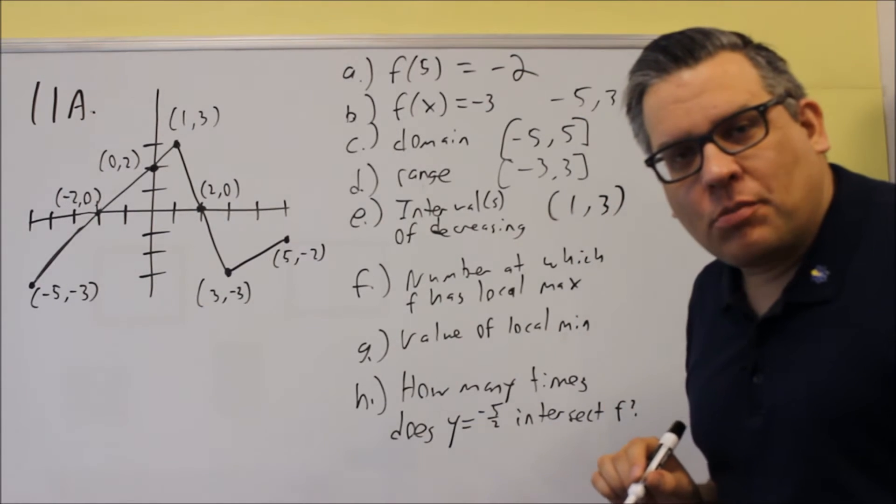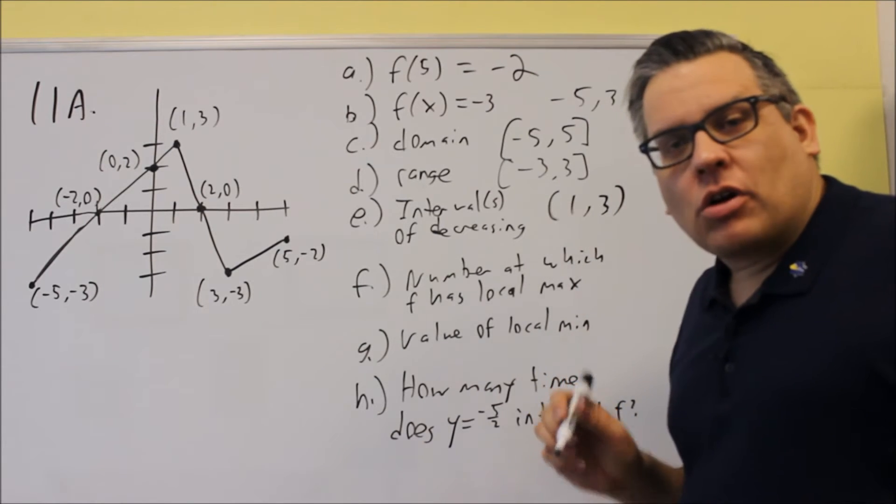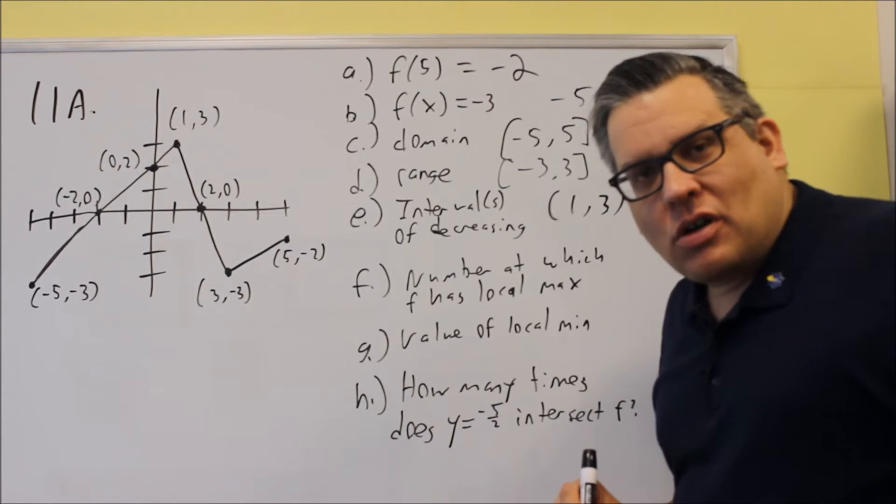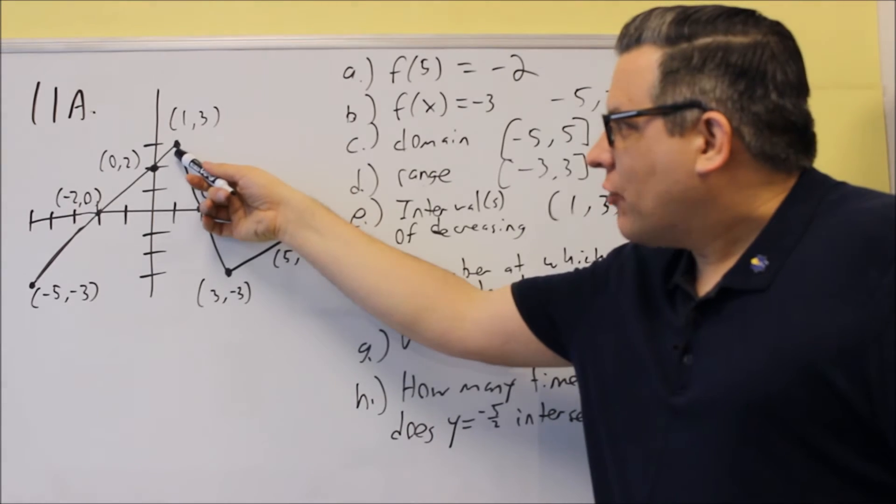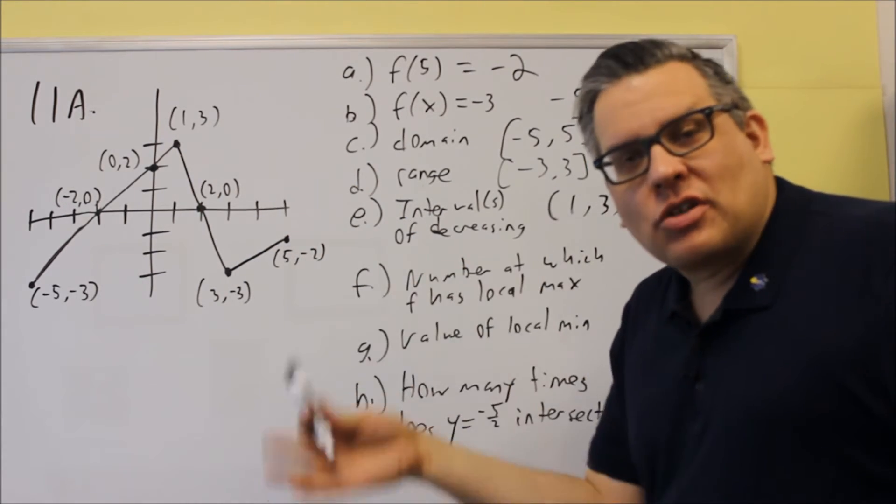This does not represent a coordinate. It represents x values. Whenever you indicate your intervals of increasing and decreasing, you can use parentheses on those. The reason why we're including parentheses is because at this spot here, for instance at 1, 3, that wouldn't be considered increasing or decreasing.